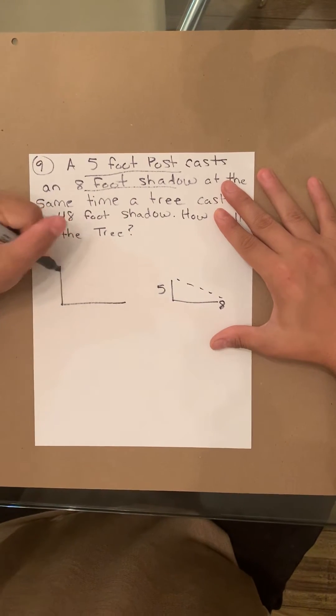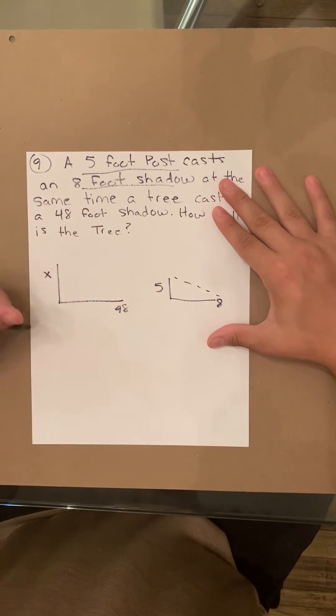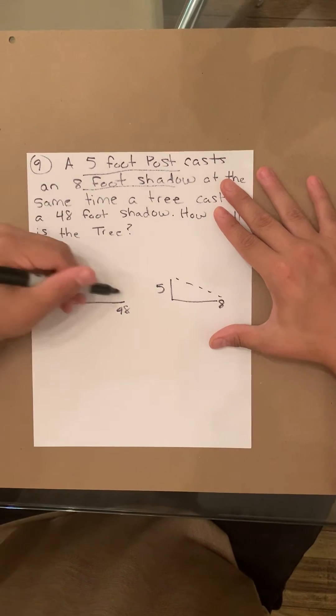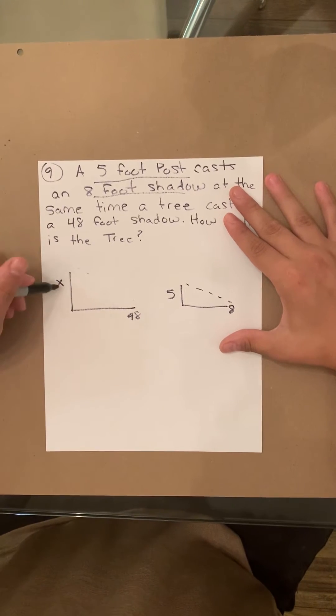Next, it's going to be the 48 foot shadow, and we're trying to find the length of the tree to know how big the tree is for the shadow. So we'll call that X.